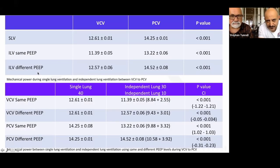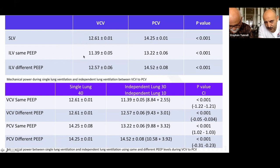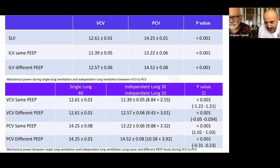The results were very interesting. Single-lung ventilation on volume control gave mechanical power of 12.61; pressure control was higher at 14.25. When we switched to independent lung ventilation with the same PEEP of 7, mechanical power in both lungs combined was actually less than ventilating both with one ventilator — which was unexpected for me.